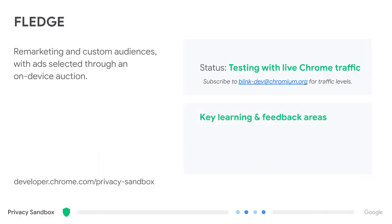Our biggest feedback from this stage is a lot of discussion about latency — about the amount of time and resources that these auctions use. We've already shipped a lot of controls so that the party running these on-device ad auctions, the publisher or the sell-side ad techs that they choose to do the job for them, can limit that resource usage. We're involved in a lot of discussions on how to get the most out of the resources that are available. Chrome also announced support for the bidding and auction services, which provides optional tooling to potentially improve latency.